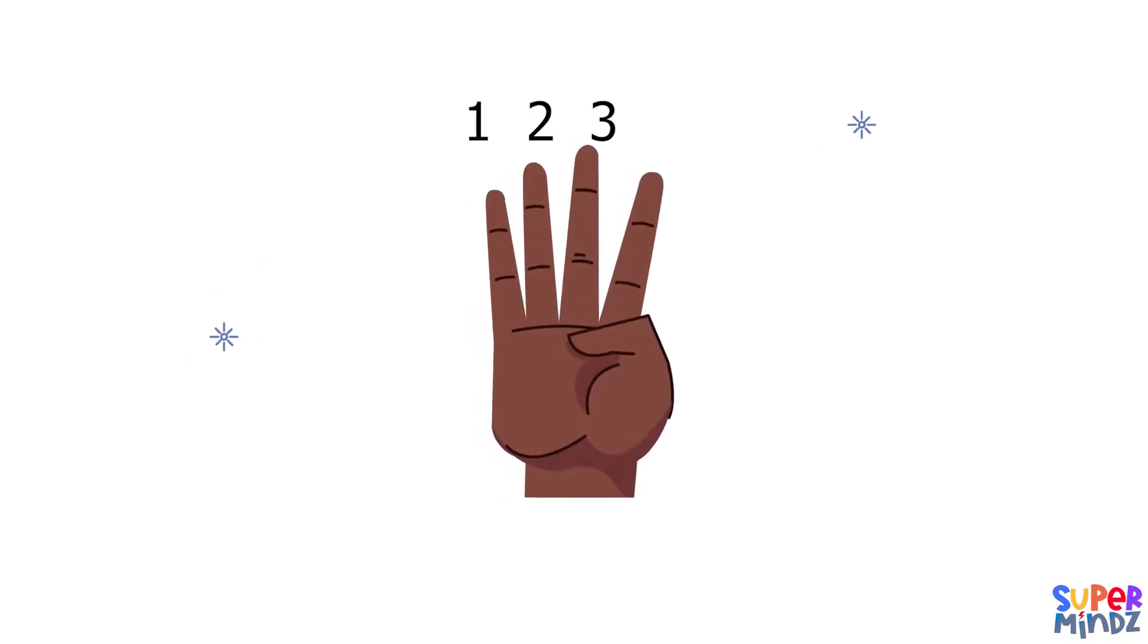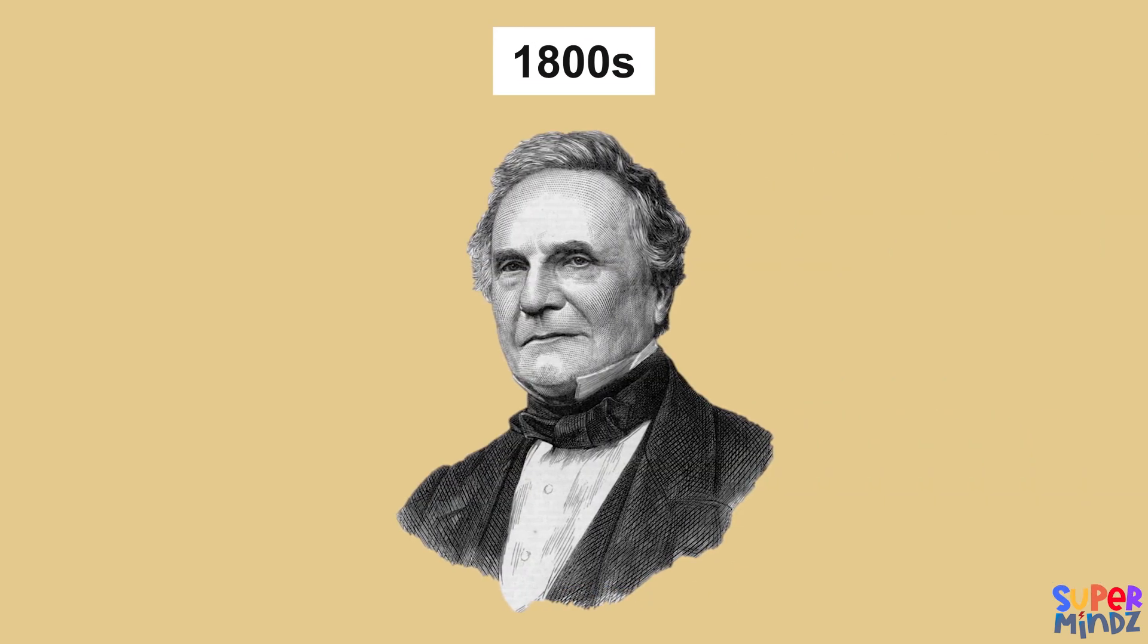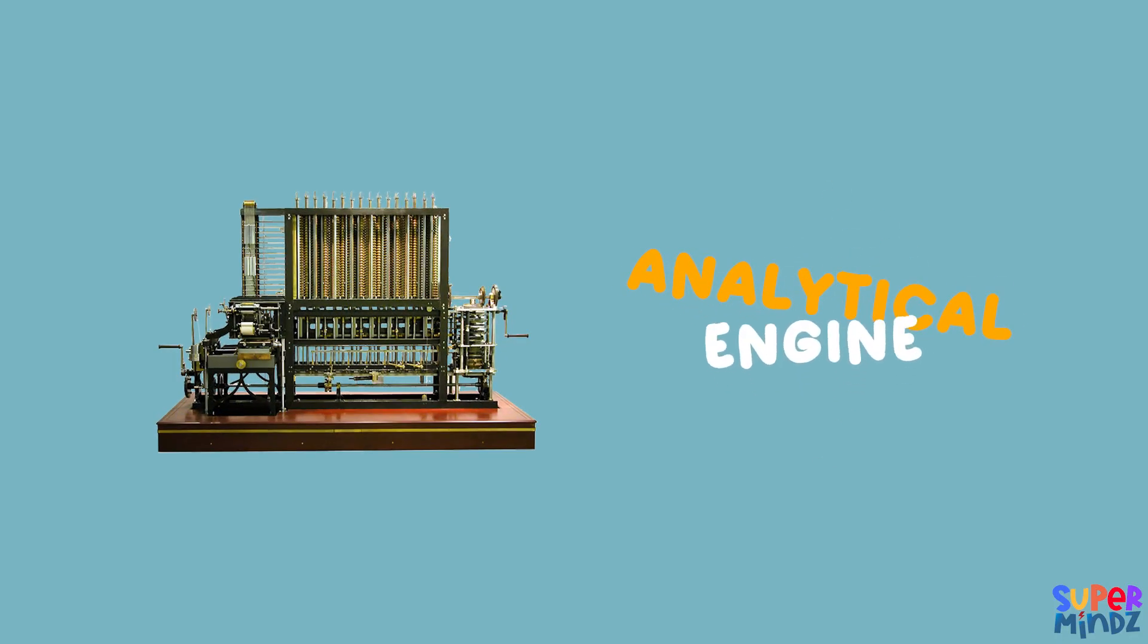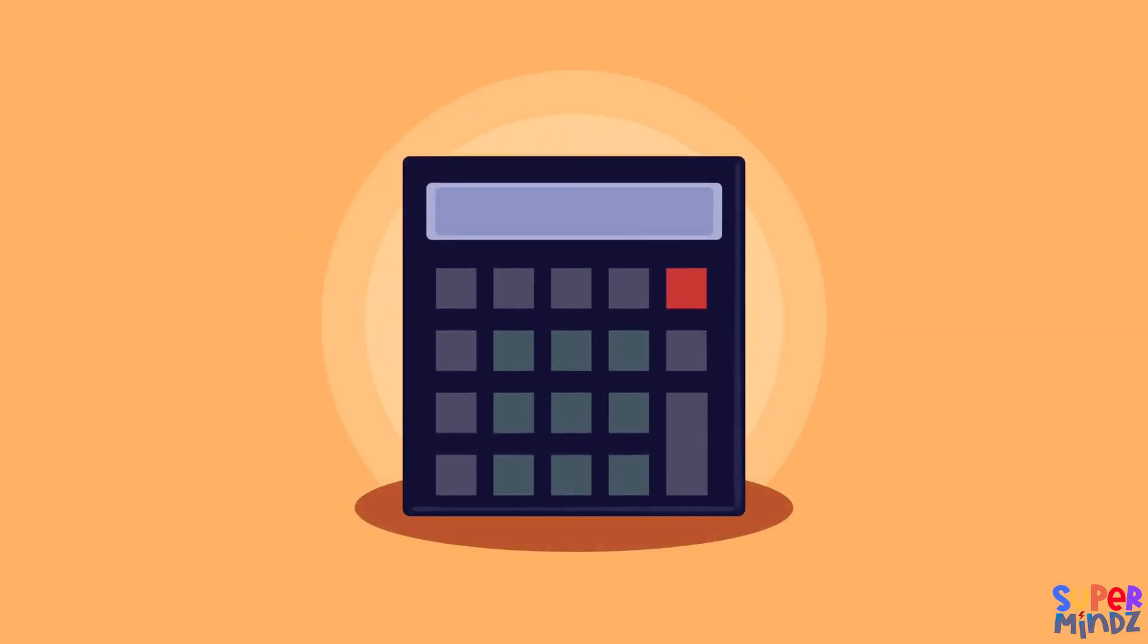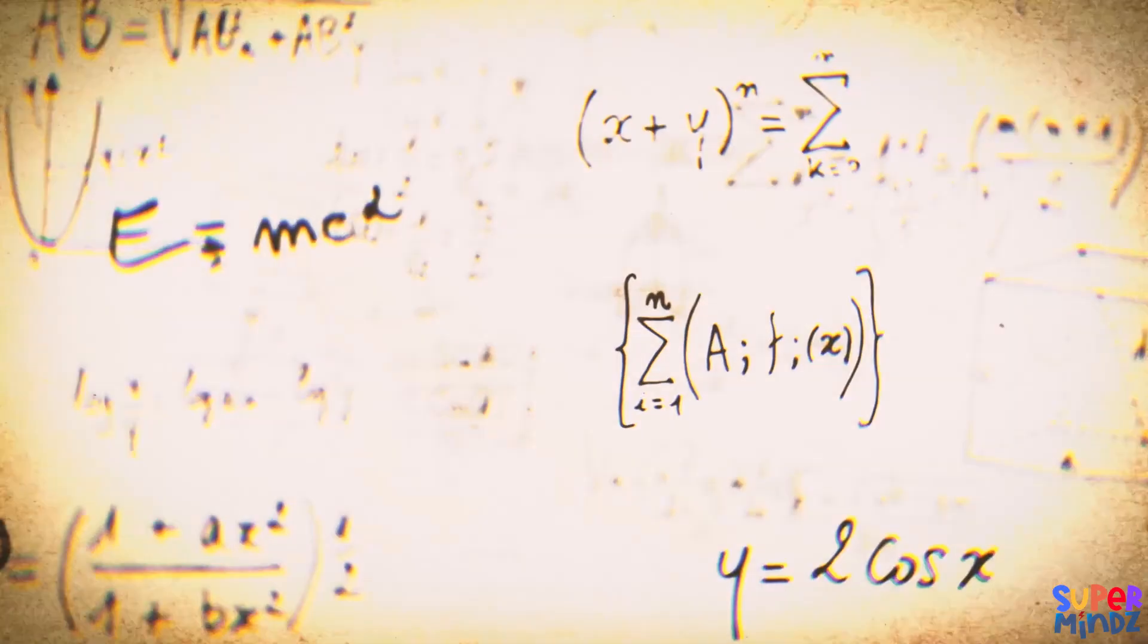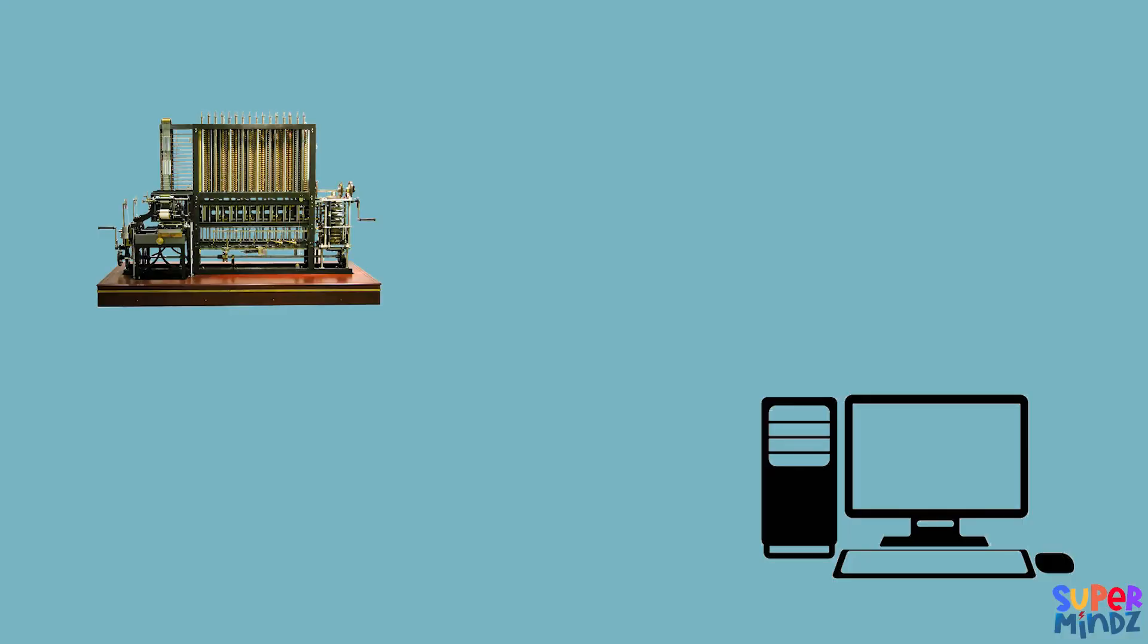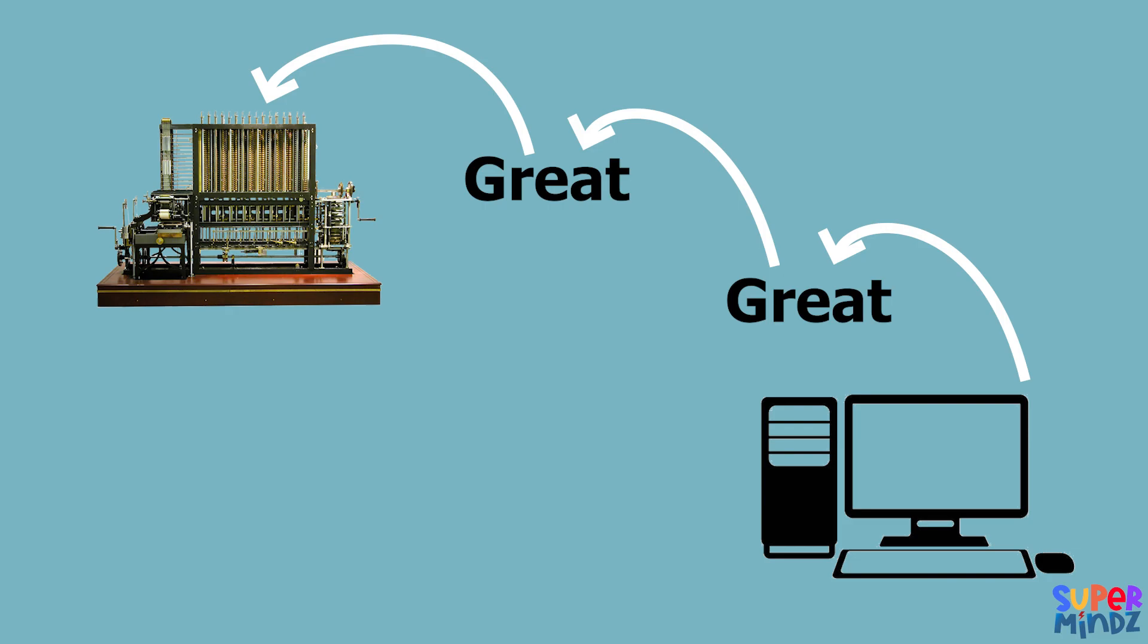Kind of like using your fingers to count. In the 1800s, a man named Charles Babbage thought of making a thinking machine. He called it the analytical engine. It was like a super smart calculator designed to solve any math problem. This machine was the great-great-grandfather of the modern computer.